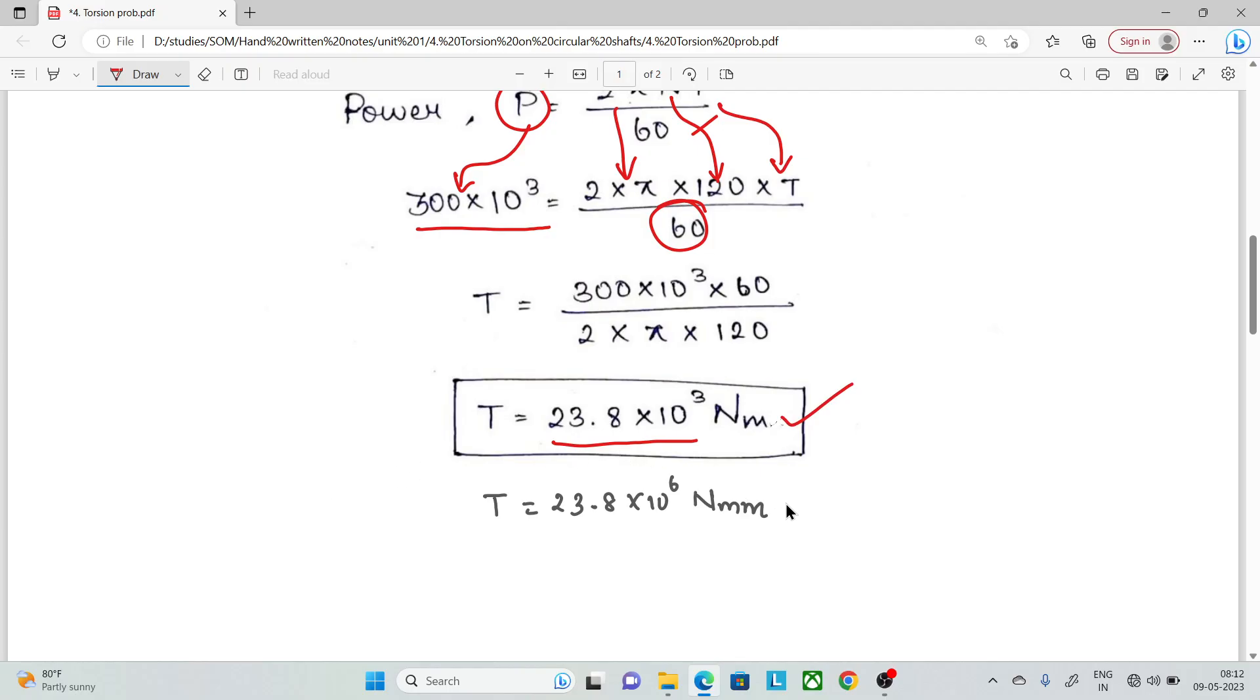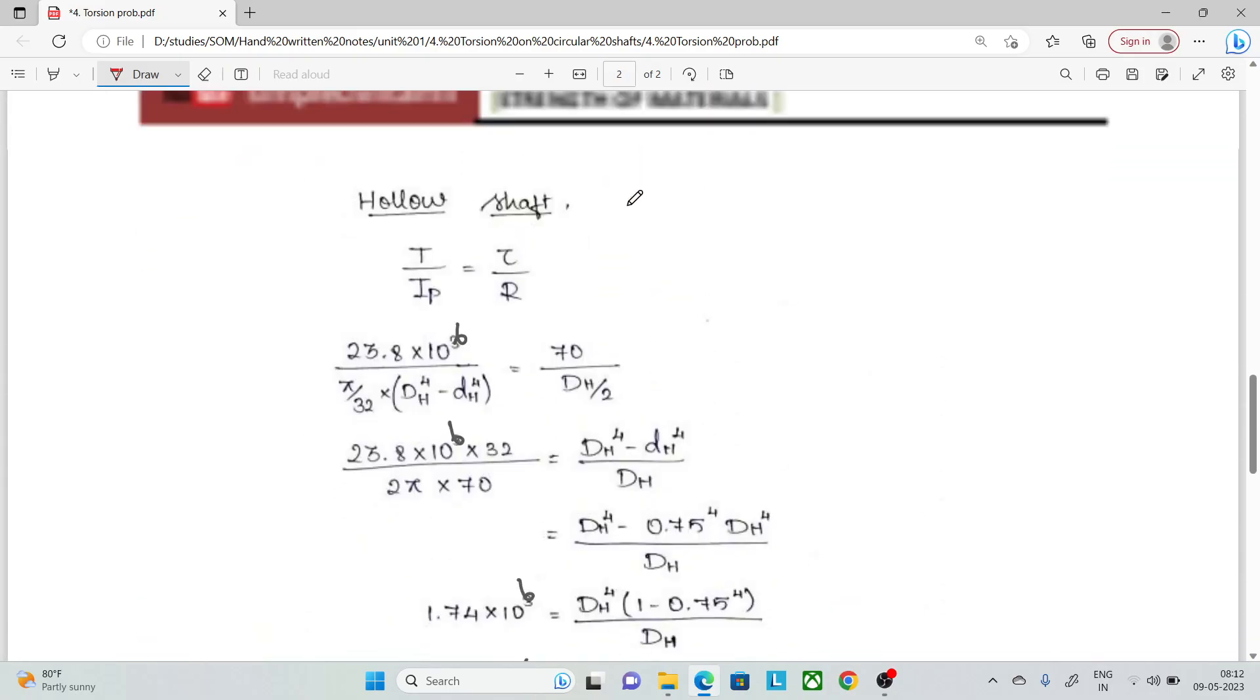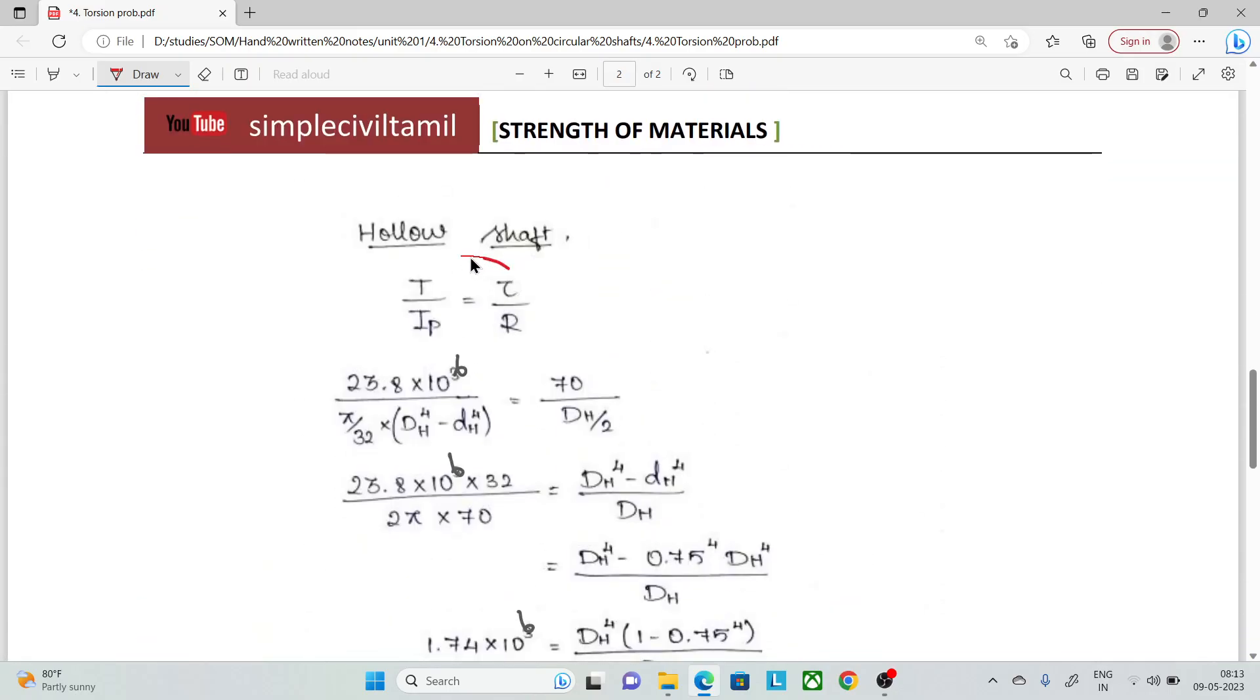That is 10⁶, converting to Newton millimeter. Now we can substitute the hollow shaft formula. For the polar moment of inertia: Ip = π/32 (d_h⁴ - d_i⁴).